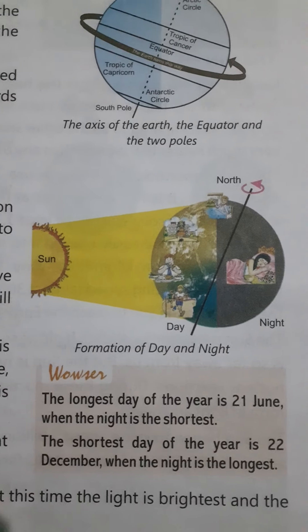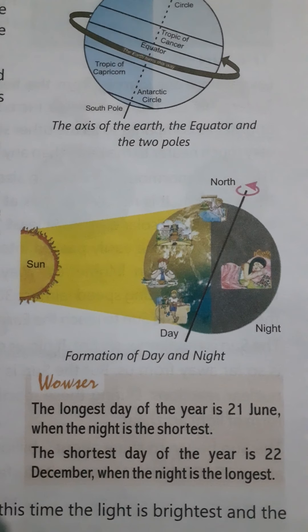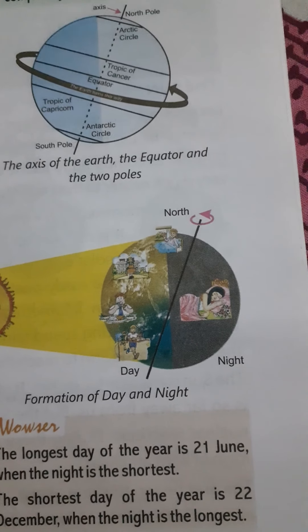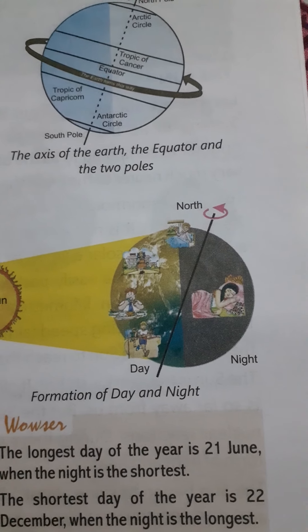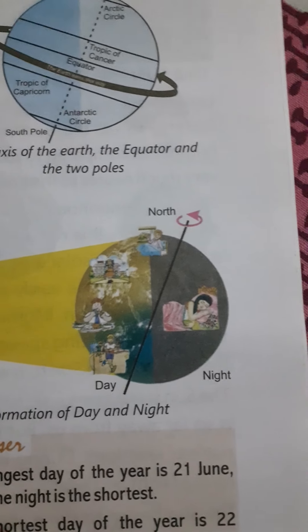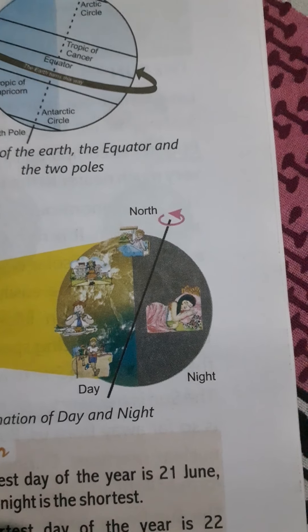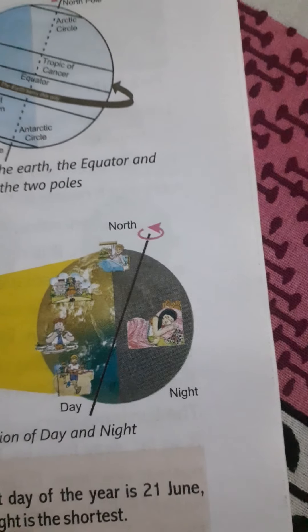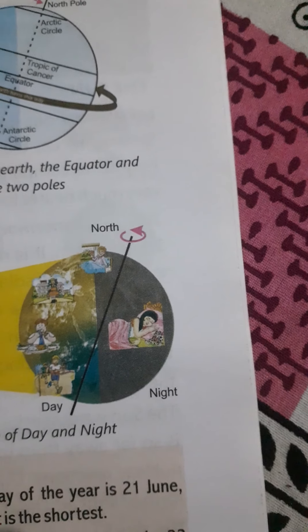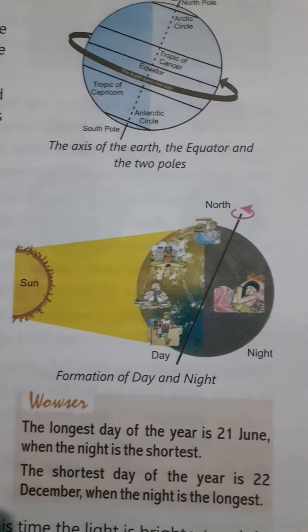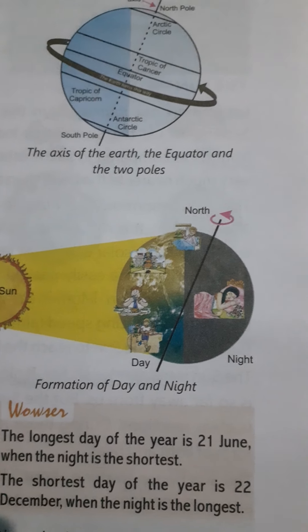In this picture we can see the Earth is rotating from west to east on its tilted axis. The tilted angle is 23.5 degrees. When this Earth rotates on its axis, it takes a total of 24 hours to complete one rotation. The one half part of the Earth which is facing the Sun is getting sunlight directly.